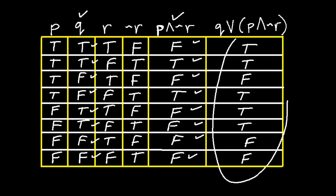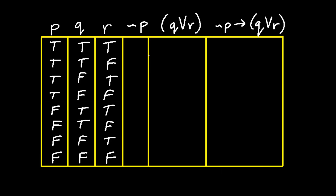So this is the complete answer to this problem. Let's try one more example. I'm going to start with the negation of p, which is simply the opposite of the p column. The first line p is true so negation of p is false. The same is true of the second, third, and fourth lines. In the last four lines p is false, so the negation of p is true.